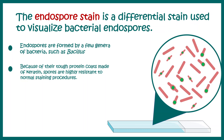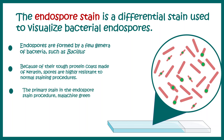Because of their tough protein coat made up of keratin, spores are highly resistant to any type of staining method, so they won't take up Gram staining. The primary stain used for endospore staining is malachite green, which is highly penetrant. At the end of the staining, bacteria that have produced endospores would be stained green.